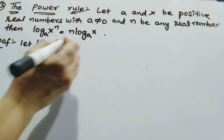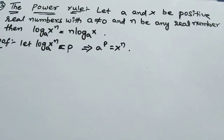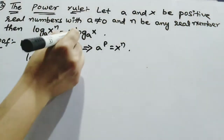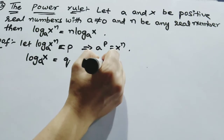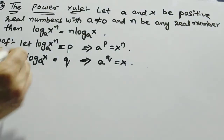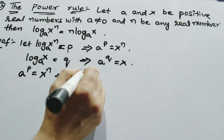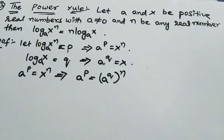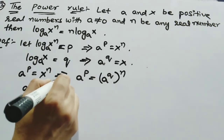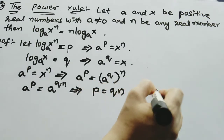Let log(x^n) base a equal to p, so a to the power of p equals x to the power of n. Then let log x base a equal to q, so a^q equals x. Substituting: a^p equals a^(qn). Since the bases are same, p equals qn, which can also be written as p equals n·q.